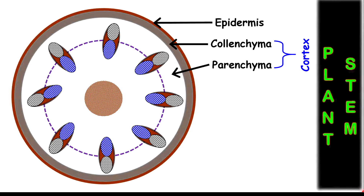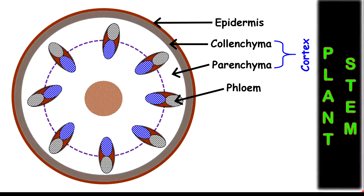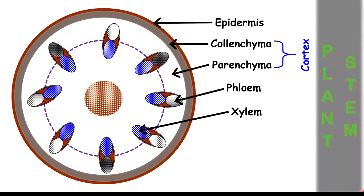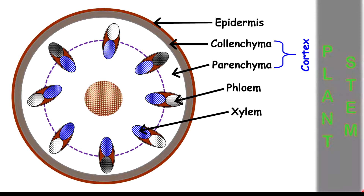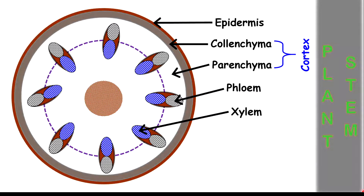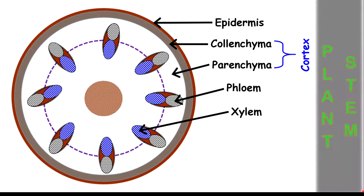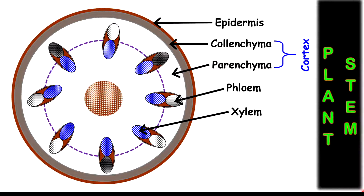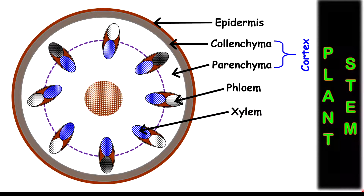Then you have the parenchyma. Together, they make up the cortex of the stem. There you have the phloem, and you also have the xylem. Notice in the plant stem how the phloem and the xylem are arranged — the phloem is closer to the outermost region, while the xylem is closer to the innermost region, to prevent excess evaporation of water while it is being transported upwards.